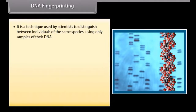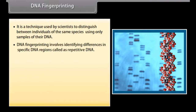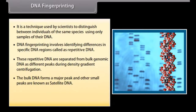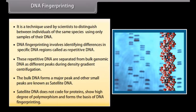DNA fingerprinting is a technique used by scientists to distinguish between individuals of the same species using only samples of their DNA. It involves identifying differences in specific DNA regions called repetitive DNA. These repetitive DNA sequences are separated from bulk genomic DNA as different peaks during density gradient centrifugation. The bulk DNA forms a major peak, and other small peaks are known as satellite DNA. Satellite DNA does not code for proteins, shows a high degree of polymorphism, and forms the basis of DNA fingerprinting.